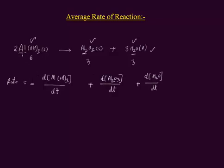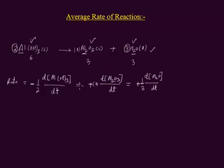To relate the rate of reactant and products, we divide their rates by their respective coefficients in the balanced equation. Aluminum hydroxide has coefficient two, that is why I divide its rate by two. Aluminum oxide has only one coefficient, so it stays in individual form — it is one. And water molecule has coefficient three, so I divide its rate by three. Now you can equate these. This is the expression of the average rate of reaction for this balanced equation.